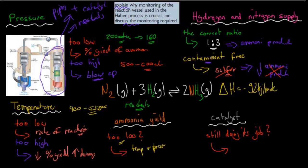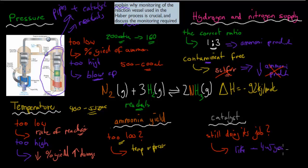The production chemist also has to make sure the catalyst inside the reaction vessel is still doing its job. Catalysts have a working life — about four to five years — and after that they have to be replaced. So the production chemist monitors the catalyst and arranges its replacement when needed.